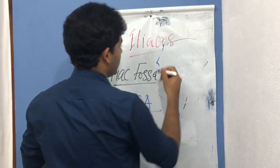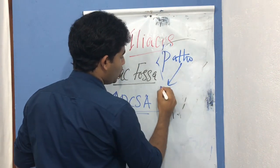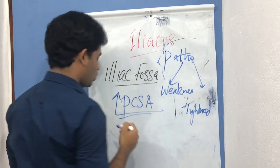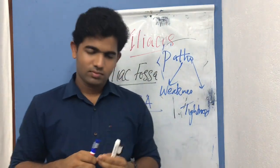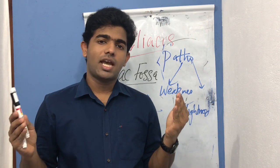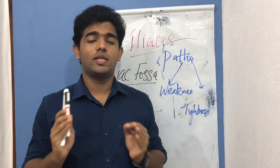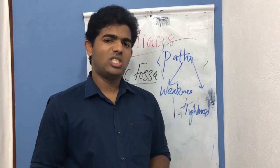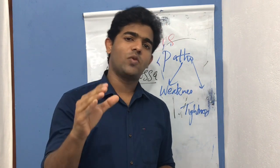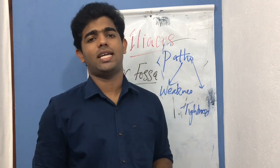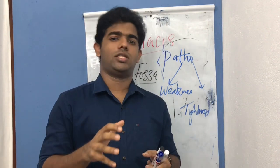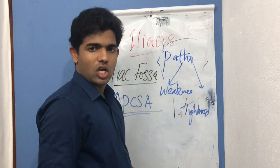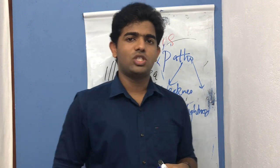The pathomechanics of the iliacus involves two conditions: weakness and tightness. When the iliacus muscle is weak, it is going to reduce hip flexion. In clinical scenarios, isolated weakness of the iliacus is rare — it is usually associated with weakness of the psoas major. When both iliacus and psoas major are weak, there is difficulty in day-to-day activities like climbing stairs, getting up from a chair, or getting out of a tub.